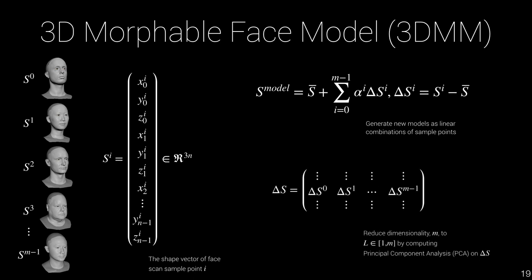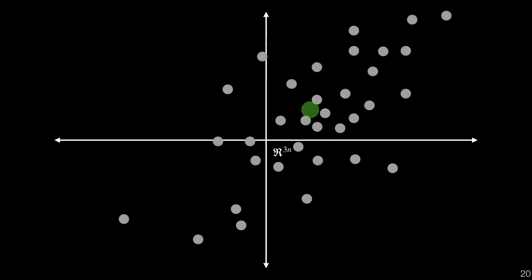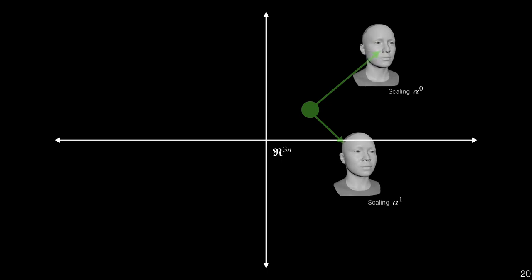By using principal component analysis, we can reduce the dimensionality of the source data and ensure that all shape vectors are orthogonal. In PCA, we take all the sample points, compute the mean of all data points, and derive principal component vectors which correspond to the features of most variance in the original dataset. By limiting the number of principal components used, we build a new basis with lower dimensionality. This makes it possible to take the mean shape and apply offsets along the principal component vectors to morph shapes where variance is highest.